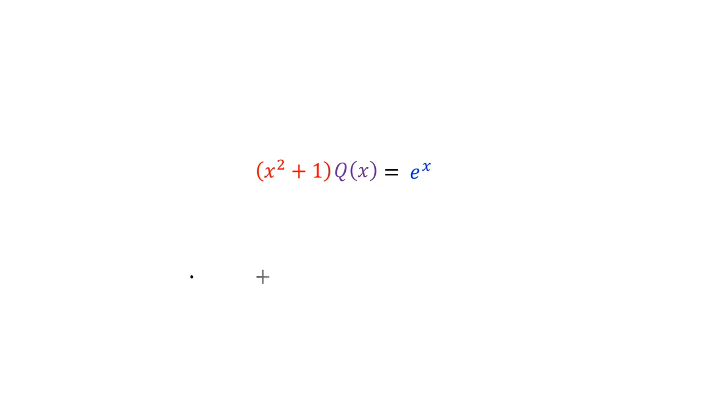On the left, we need to use the product rule. First, we use the first term. Then we need the derivative of the second term. We don't have a formula for it, so we'll just write q prime of x. Then we add the second term times the derivative of the first. And on the right, the derivative of e to the x is just e to the x.